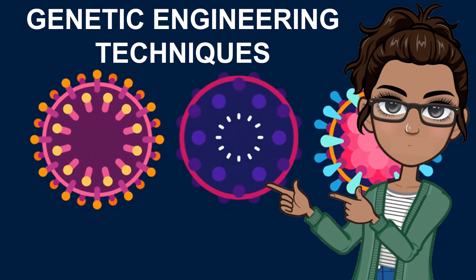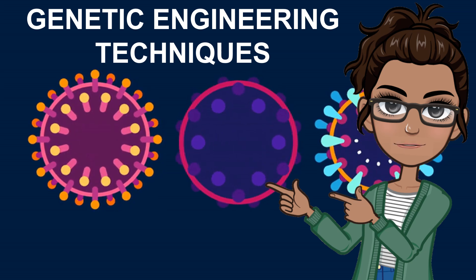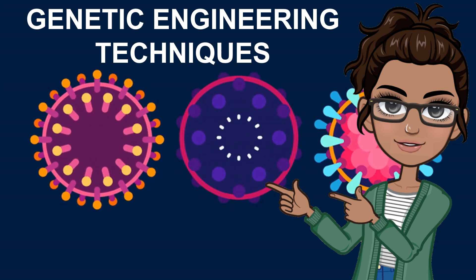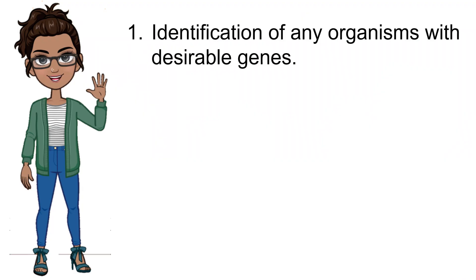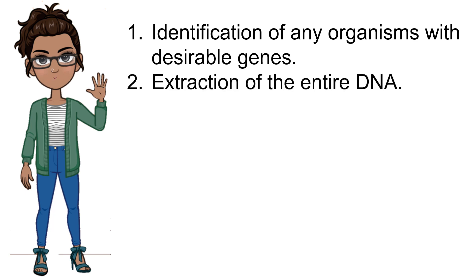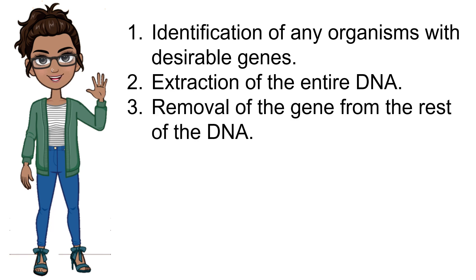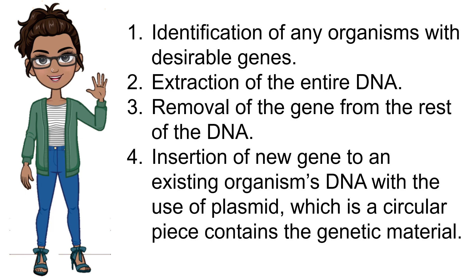The following are the techniques and steps in genetic engineering processes for any organisms to be modified. Number one, identification of any organisms with desirable genes. Two, extraction of the entire DNA. Three, removal of the gene from the rest of the DNA. Four, insertion of the new gene into an existing organism's DNA with the use of a plasmid, which is a circular piece that contains the genetic material.